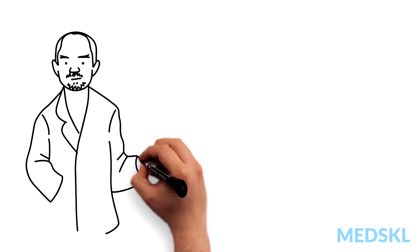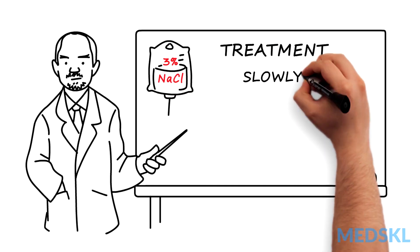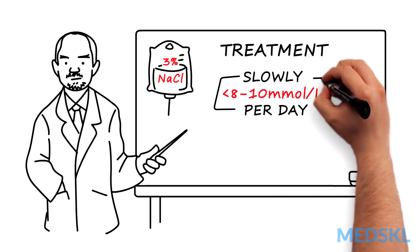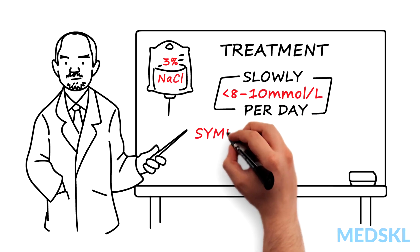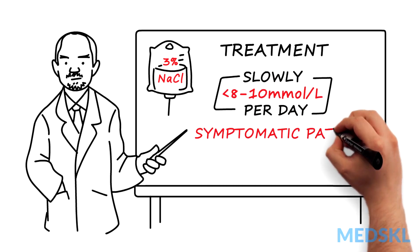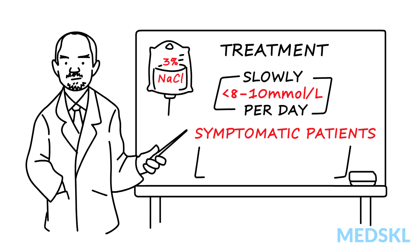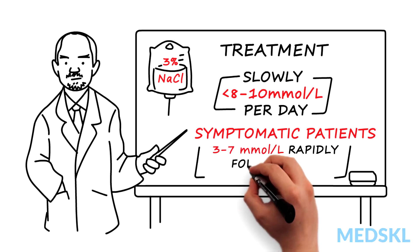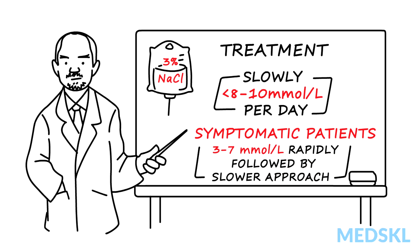Therefore, the optimal way to treat hyponatremic patients is slowly, at a rate of less than 8 to 10 millimoles per liter per day. The only exception is if patients are symptomatic. In symptomatic patients, treat the first 3 to 7 millimoles per liter rapidly, followed by the slower approach.